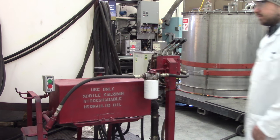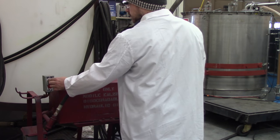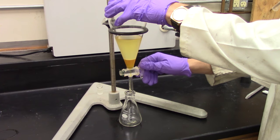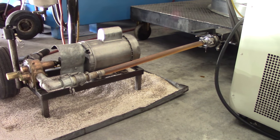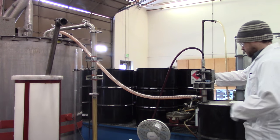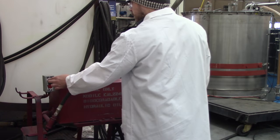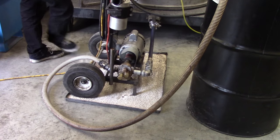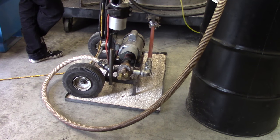After an hour, we turn off the agitation and let the product sit for at least two hours. The heavier glycerin settles to the bottom. We drain off as much as we can, add the remaining 20% methanol and catalyst, and agitate again. Once the second reaction is finished and the glycerin has settled, we drain off the glycerin co-product.